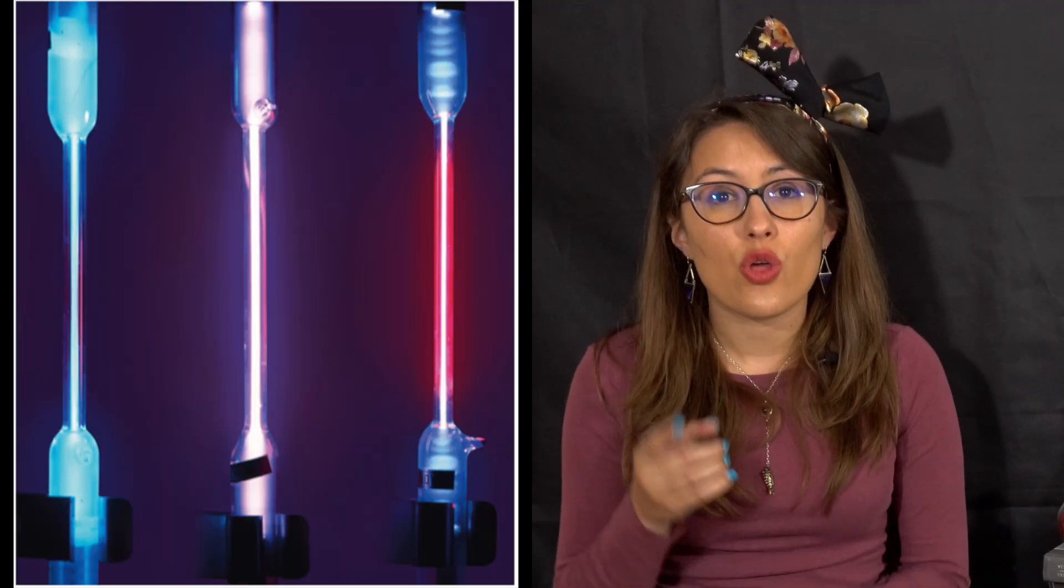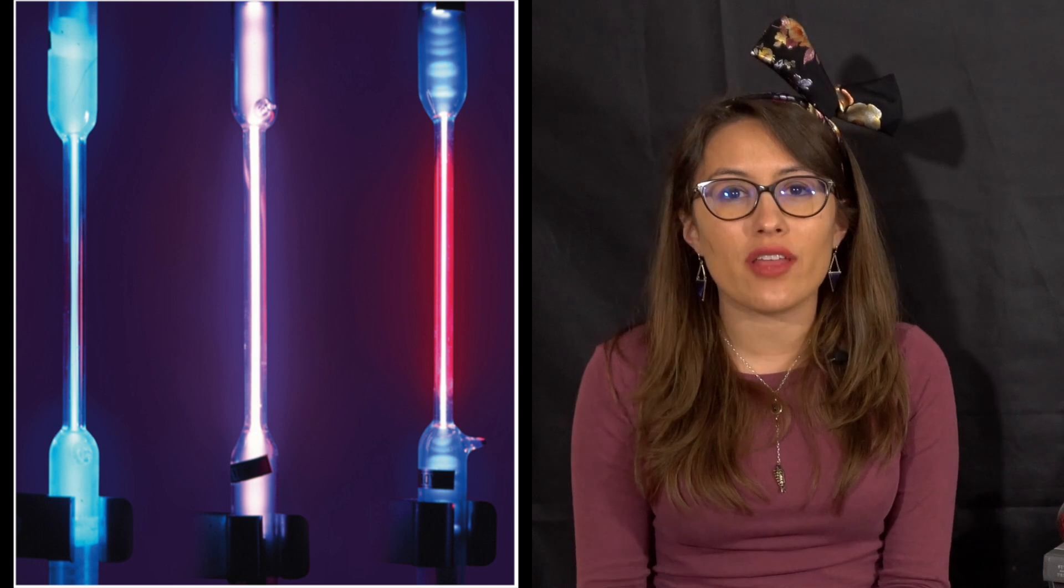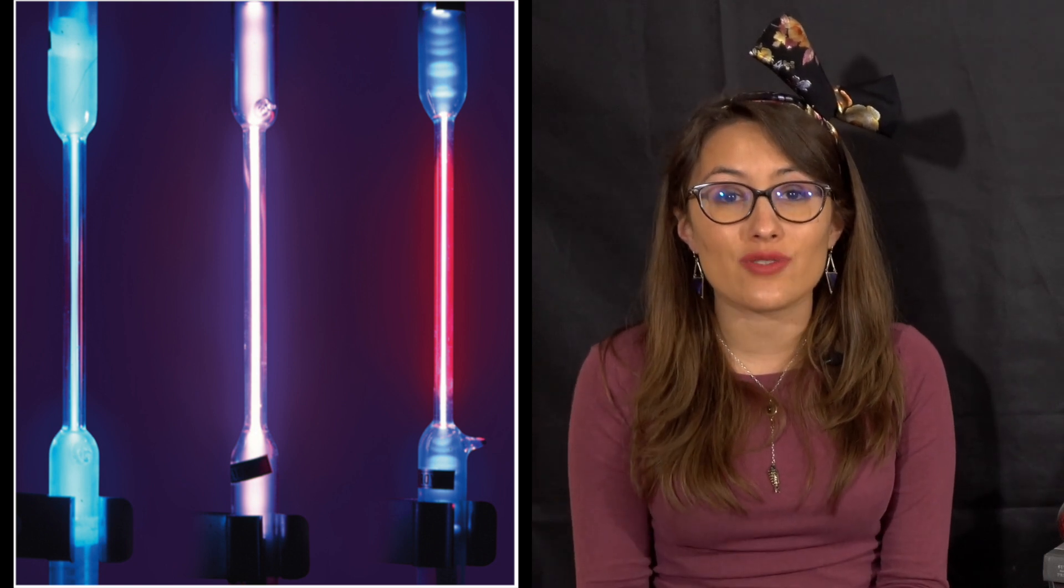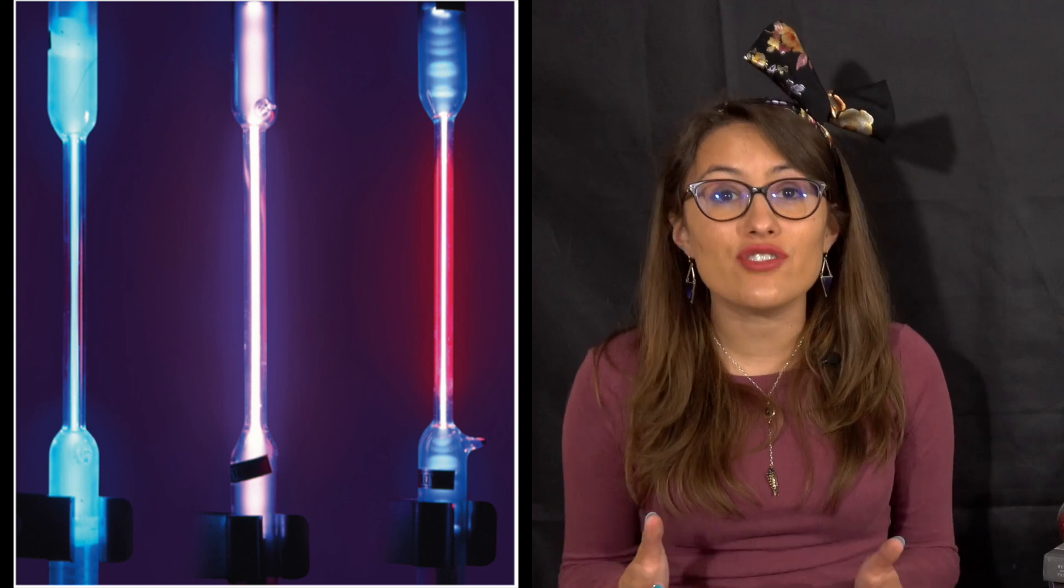Now in the case of neon lights, those glass tubes are actually filled with neon gas. And when an electric current is passed through the tube, the atoms absorb that energy. Eventually, these atoms will release this energy in the form of light.